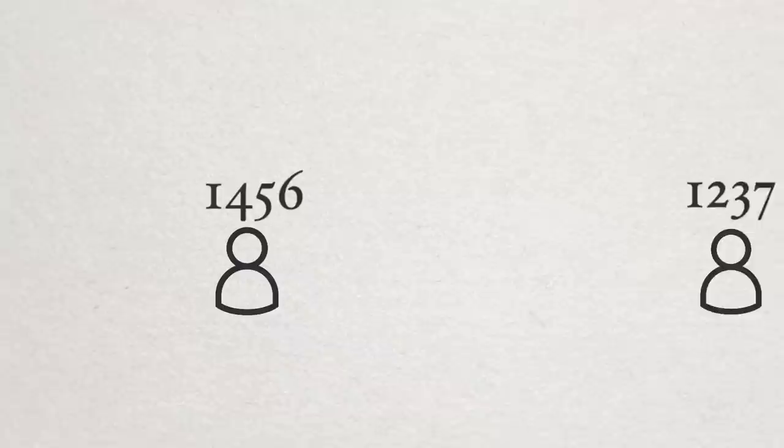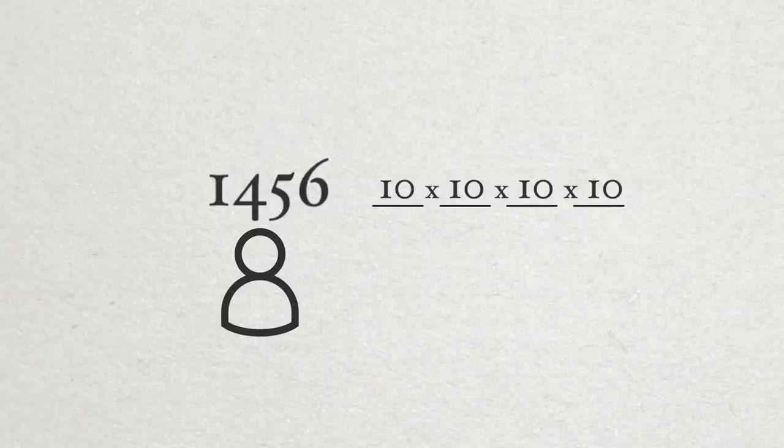with an eight-digit secret, if one person knows the first four digits, then they only need to guess through 10,000 possible combinations to find the key, whereas someone with no information would need to guess from 100 million possible combinations.